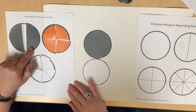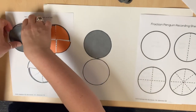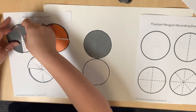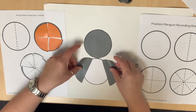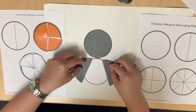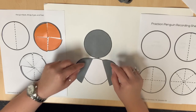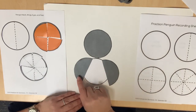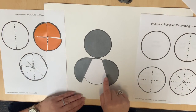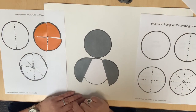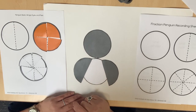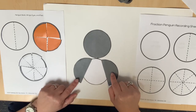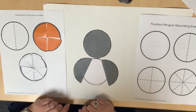Have students cut the circle along the dotted line. How many equal parts do you have now? There are two. How can we name each part? Each part is one half because there are two total pieces in the whole circle.